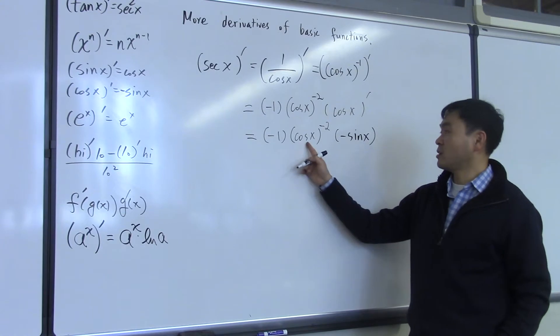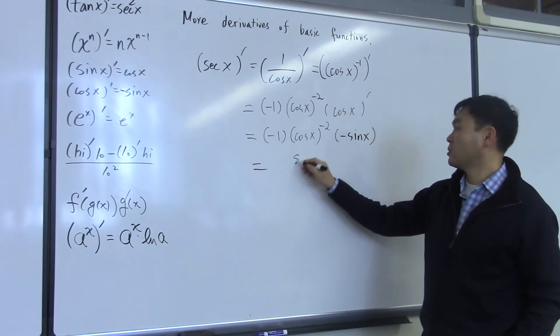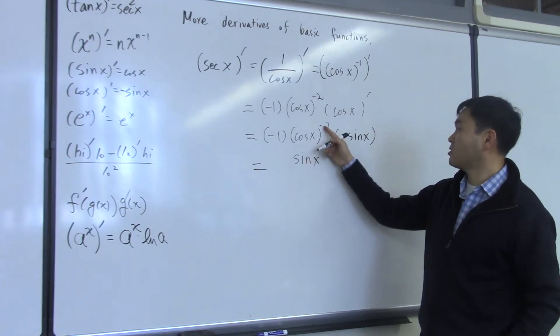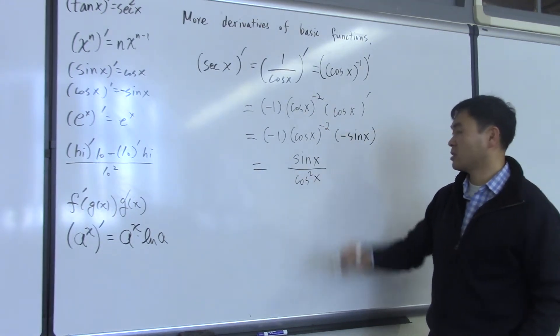Minus minus is plus, and let's rewrite this as a fraction. So, you end up with sine x on the top. Because this is negative two, you have cosine squared x in the denominator.